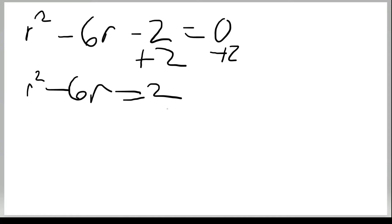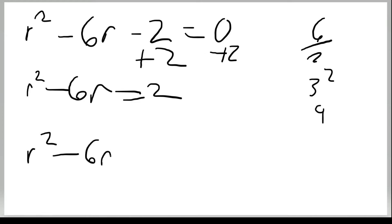Now we do the same thing with b over 2 squared: 6 divided by 2 equals 3, and 3 squared equals 9. We add 9 to both sides, giving us r squared minus 6r plus 9 equals 11.